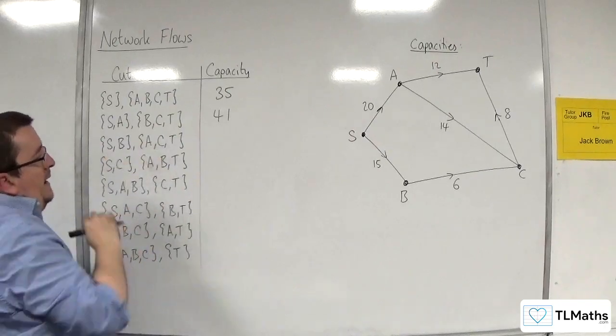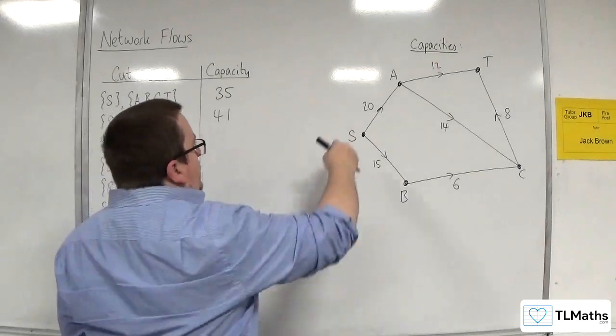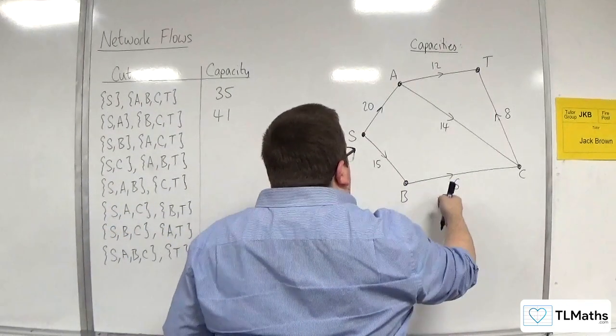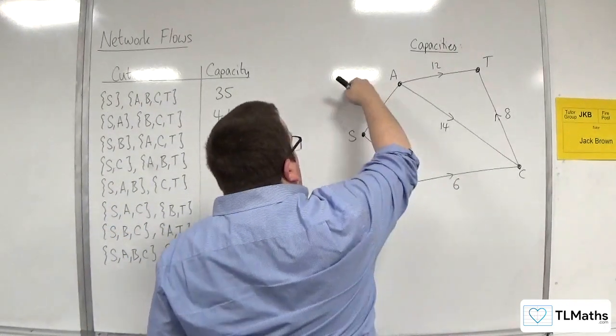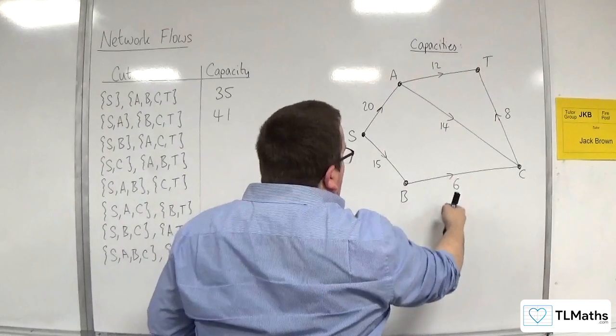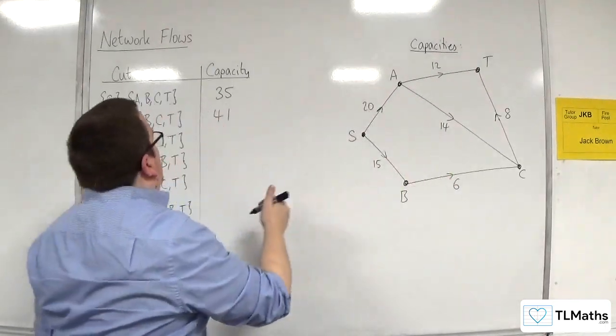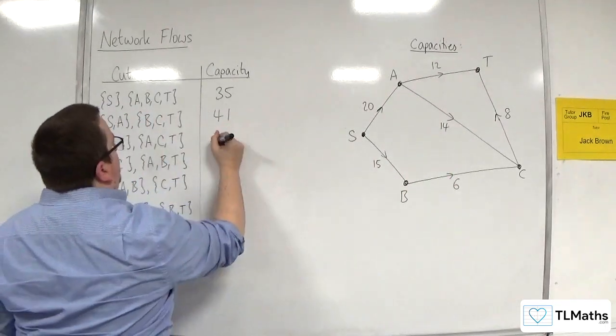S, B — that's going to cut through there. So we've got 20 and 6, so 26 for that one.